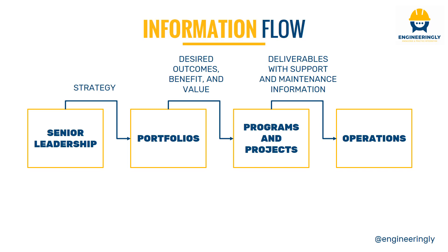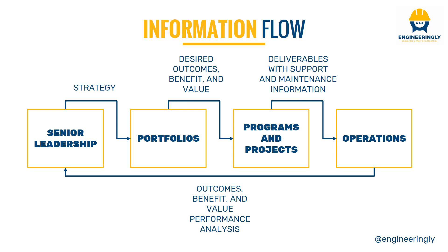From right to left, there is always a reporting line. People in operations directly report to program and project managers; program and project managers report to portfolio managers; portfolio managers report to the senior leadership of the organization. In a nutshell, the outcomes, benefits, and value performance analysis are reported back from operations to the senior leadership through the layers of programs, projects, and portfolios.